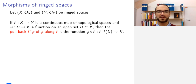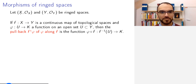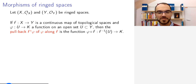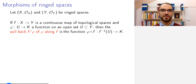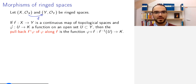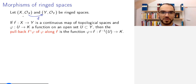Now we can define morphisms of ringed spaces. We have two ringed spaces, (X, O_X) and (Y, O_Y), where X and Y are topological spaces and O_X, O_Y are sheaves of function rings. We want to define what it means to have a function from one to the other — it should be a function from the set X to the set Y that behaves reasonably with respect to the topology of X and Y and with respect to these rings.